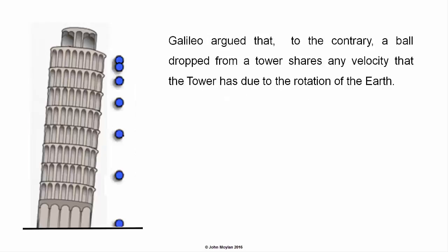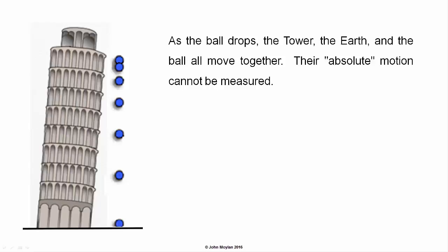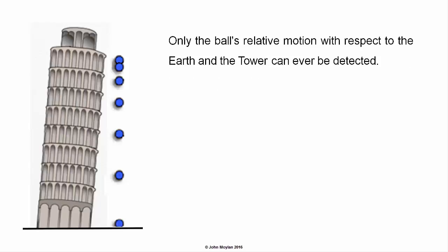Galileo argued that, to the contrary, a ball dropped from a tower shares any velocity that the tower has due to the rotation of the earth. As the ball drops, the tower, the earth and the ball all move together. Their absolute motion cannot be measured. Only the ball's relative motion with respect to the earth and the tower can ever be detected.